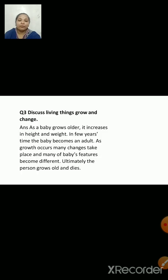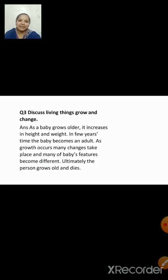Discuss: living things grow and change. As a baby grows older, it increases in height and weight. In a few years' time, the baby becomes an adult. As growth occurs, many changes take place and many of a baby's features become different. Ultimately, the person grows old and dies. We are going to end this session here.